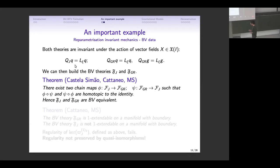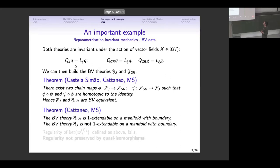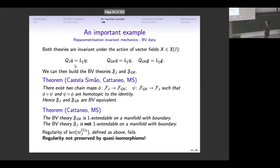This is not extremely surprising until I tell you that while the gravity theory is one-extendable to a BV-BFV theory on a manifold with boundary, the Jacobi theory is not. Recall there was a regularity requirement. The problem is that the kernel of the induced one-form on the boundary for Jacobi theory is not regular. From this, you conclude that the regularity of this kernel is not preserved by quasi-isomorphisms.